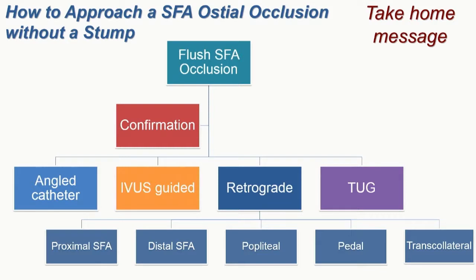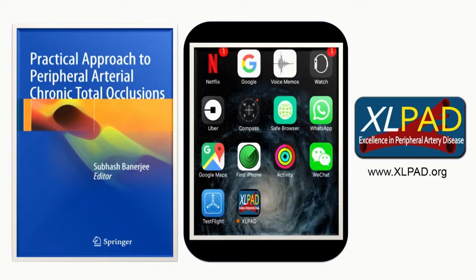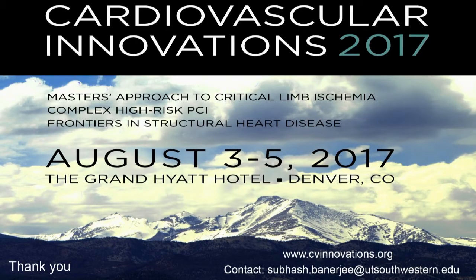To summarize: if you have a flush occlusion of the SFA, don't believe it — first confirm. Angulated views are extremely important. The four approaches I suggest are: an angled catheter approach, intravascular ultrasound confirmation of the ostium location, a retrograde approach, and finally the TUG (transcutaneous ultrasound guidance) approach, which eliminates guesswork and allows crossing through the true lumen. Our work has been published and is available as a practical approach on an iPad application and at xlpid.org.